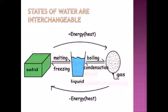Now next: states of water are interchangeable. Water can be converted into solid form — that is ice — by keeping it in the refrigerator or by cooling and freezing it. The same water can also be converted into steam or gaseous form by boiling. So water can be changed into different states — liquid, solid (ice), and gaseous (steam).